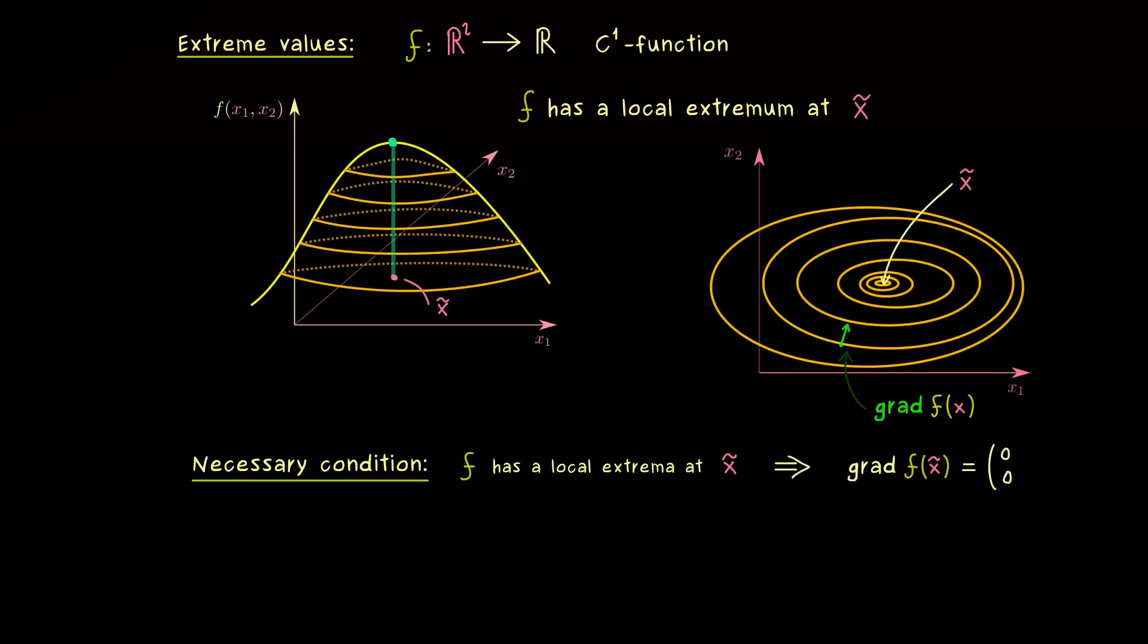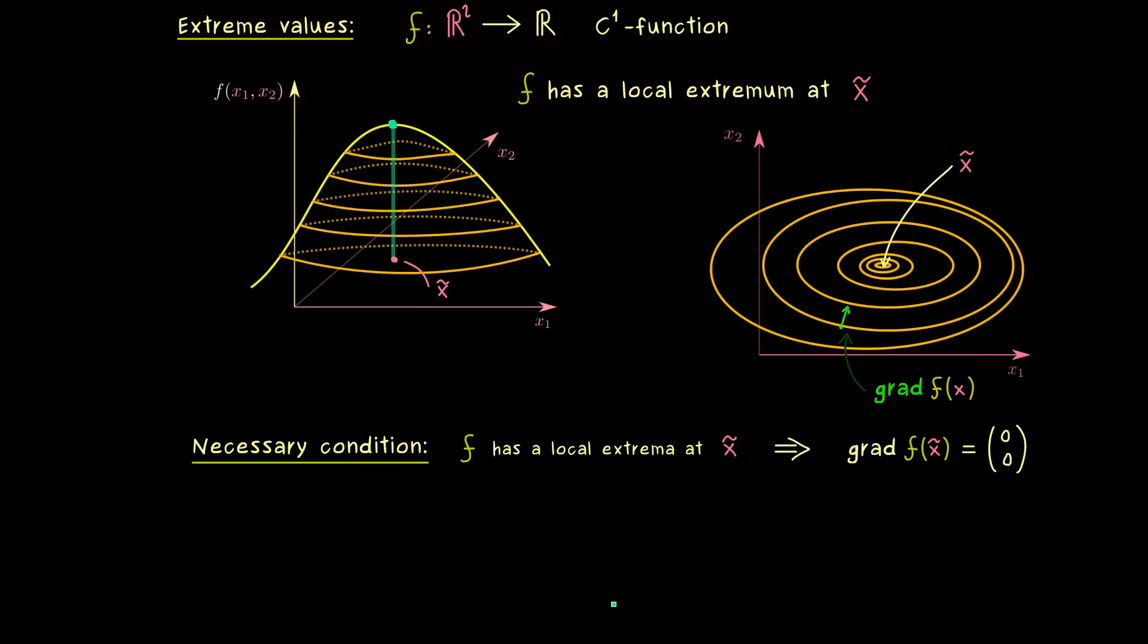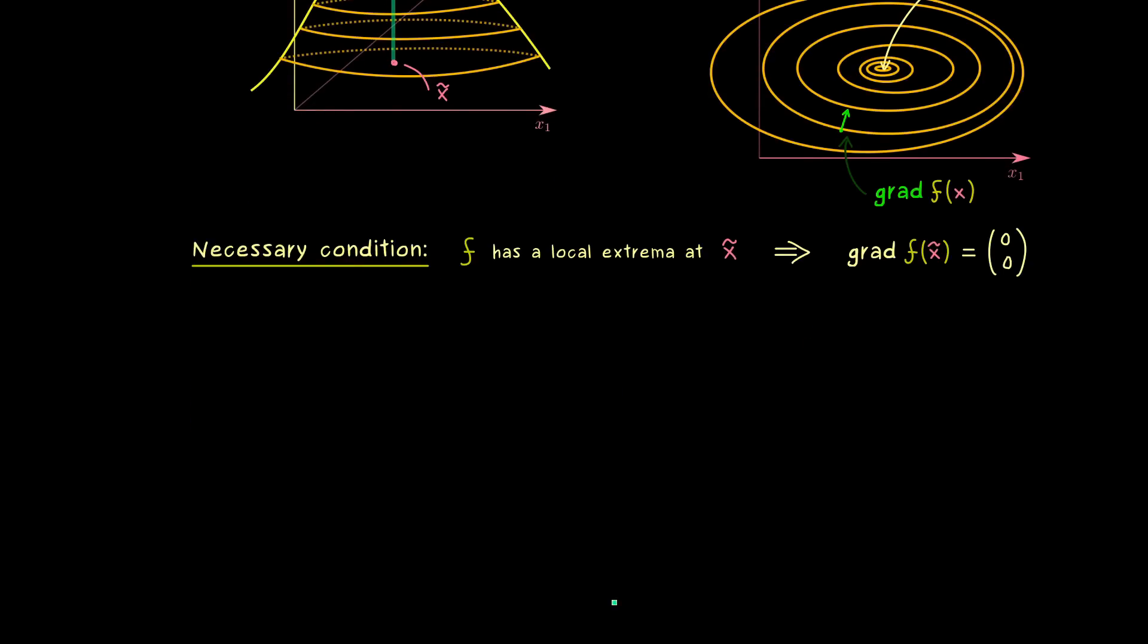So it is necessary that the gradient vanishes. In the two-dimensional case, this means that we have (0,0) for the gradient at x̃. But here, please don't forget, in general, this is just an implication in this direction. We cannot reverse it. So these things we already knew from part 18, and now we can start with something new.